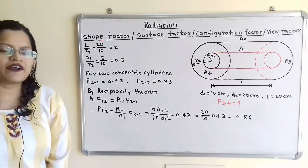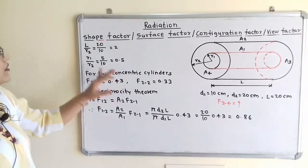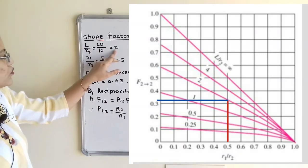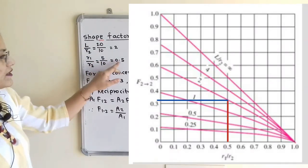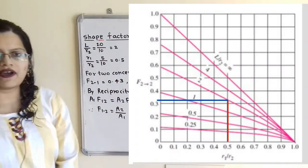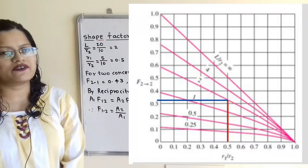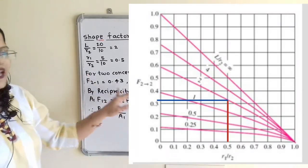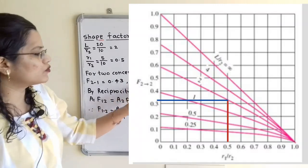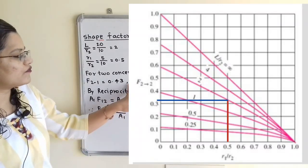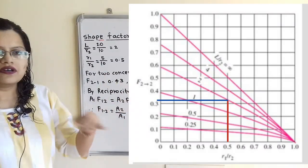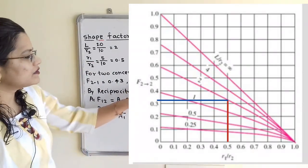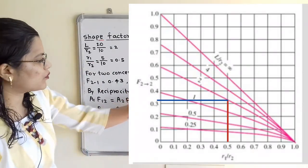From the second graph, using L/R2 = 2 and R1/R2 = 0.5, we find the point of intersection and read from the horizontal line to get F(2→2) = 0.33 — the shape factor of surface 2 to itself.